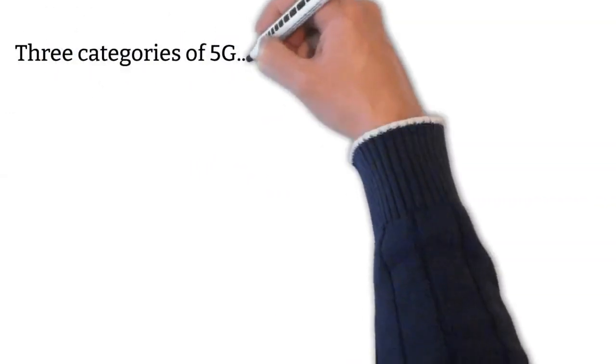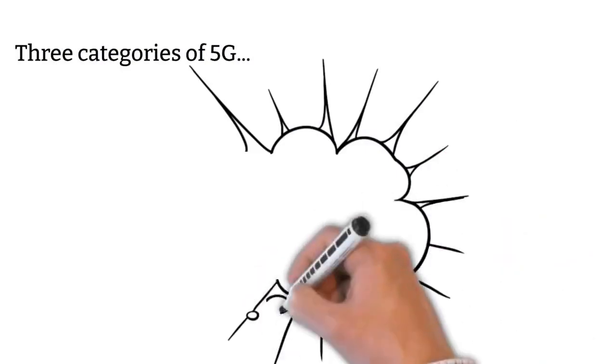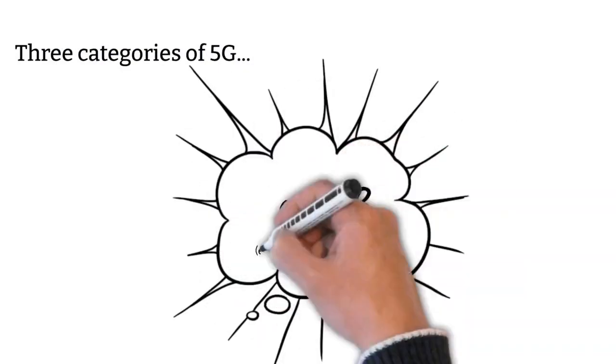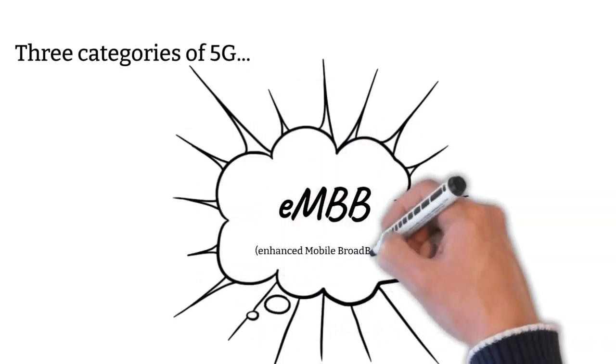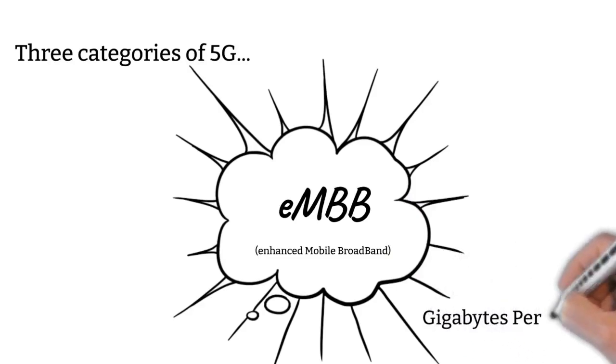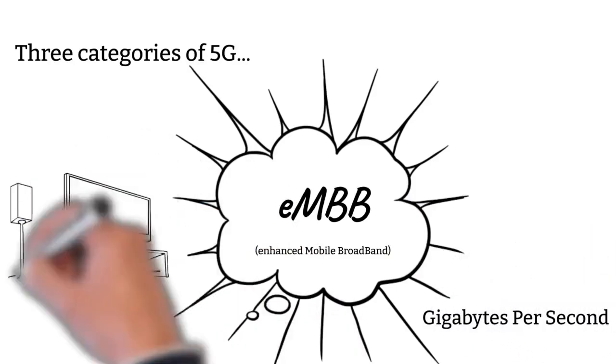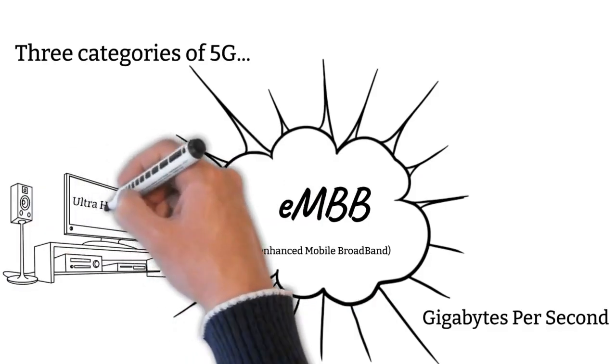There are three categories of 5G. The first is EMBB, which stands for Enhanced Mobile Broadband. EMBB concerns the transfer of data, which is gigabytes a second. This allows for streaming of Ultra HD video, for example.